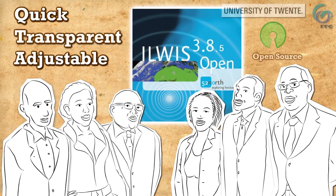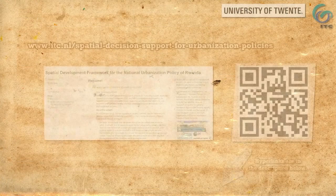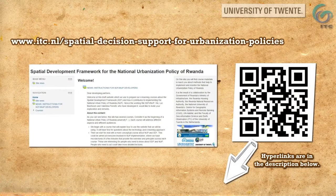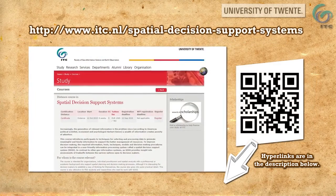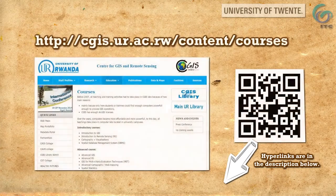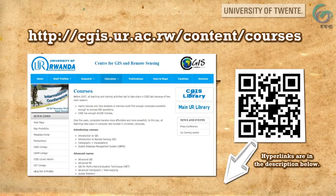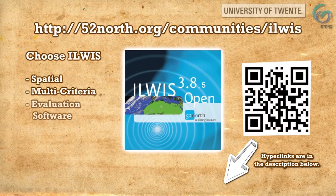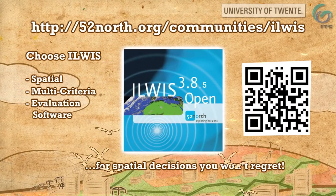It is open source software and available for free. Many organisations have already benefited. Learn at our targeted open online course for the National Urbanisation Policy of Rwanda, or enrol in the distance course at ITC, and in courses at the Centre for GIS and Remote Sensing of the University of Rwanda. Choose ILWIS spatial multi-criteria evaluation software for spatial decisions you won't regret.